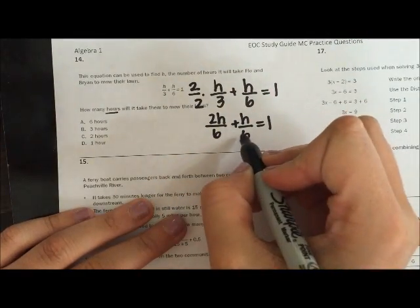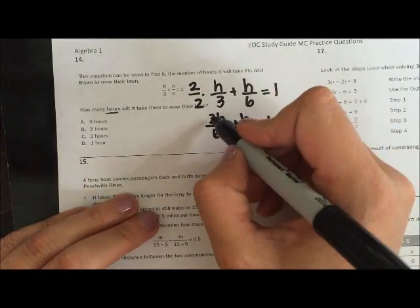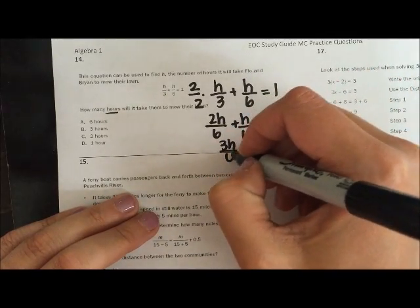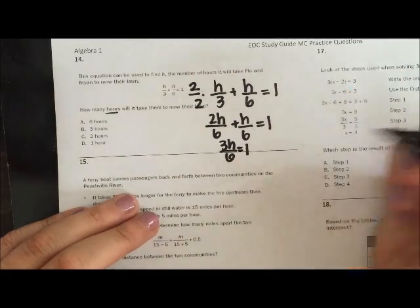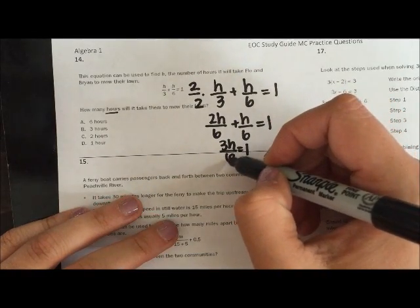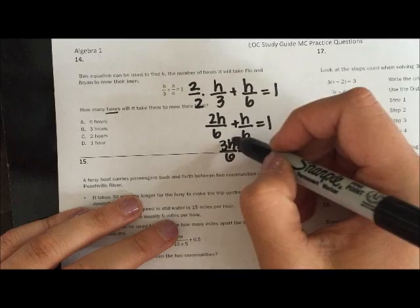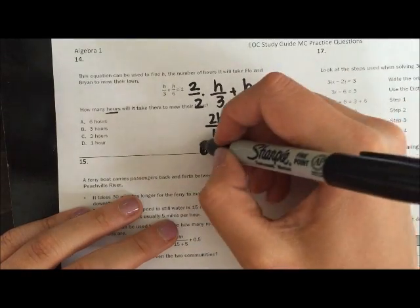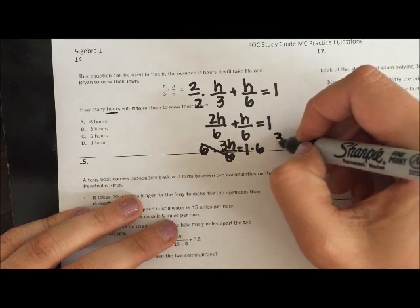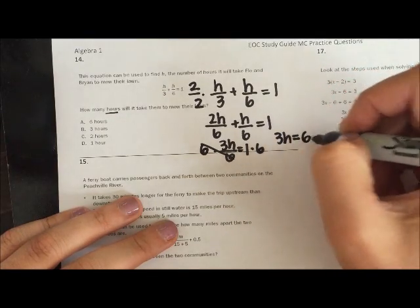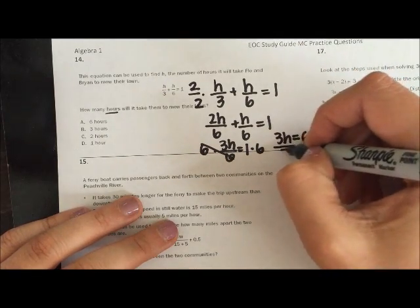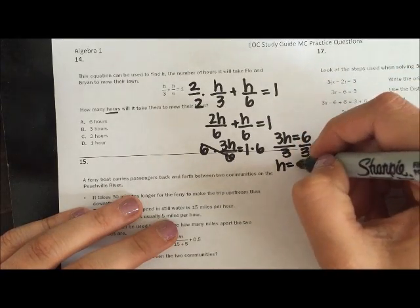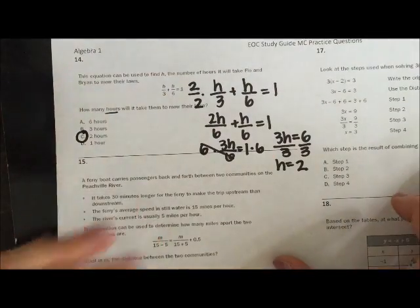Well, now since I have like denominators, I can just combine what's on top. So 2h plus h gives me 3h. This is division in order to get rid of the 6 or to move it to the other side, so we can solve for h. I'm going to do the opposite. I'm going to multiply. So I get 3h equals 6, because 1 times 6 is 6. And then finally divide by 3. So h would be 6 divided by 3, which is 2. So c would be your option.